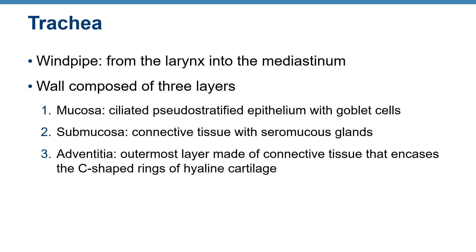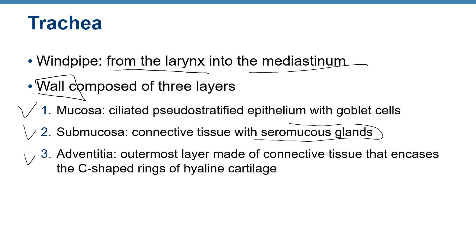The trachea runs from the larynx into the mediastinum and connects to the primary bronchi and the respiratory tree. The tracheal wall has three layers: mucosa, submucosa, and adventitia. The mucosa is ciliated pseudostratified epithelium with goblet cells. The submucosa is connective tissue with seromucous glands. The adventitia is the outer connective tissue layer containing C-shaped rings of hyaline cartilage that keep the trachea open at all times.